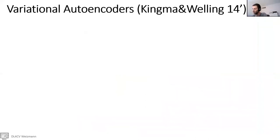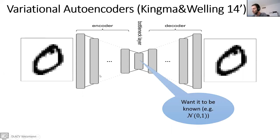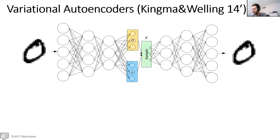To address this, we have the variational autoencoder. At a high level it looks the same — an autoencoder whose goal is to take an image and recreate the same image on the other side. But this time I want the latent representation to be known, for example, the standard normal distribution. So how do we do it? We split each neuron into a mean and standard deviation, and then sample from this mean and standard deviation. The network outputs two numbers for each neuron — a mean and standard deviation — and then samples from them.